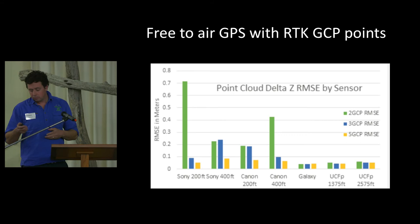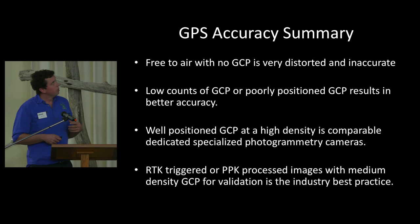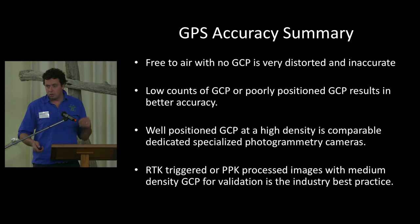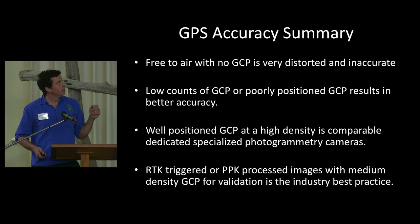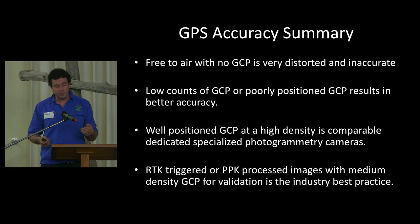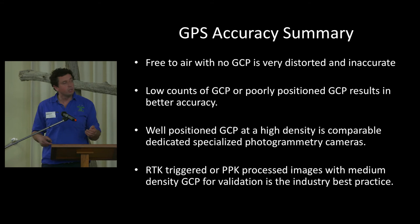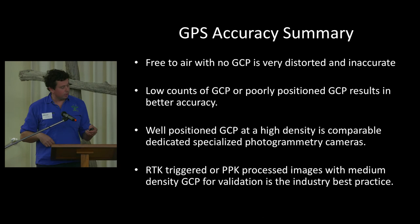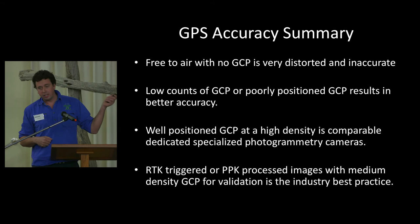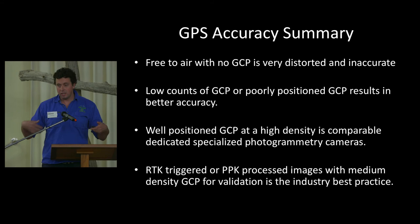To summarise GPS accuracy: free to air with no ground control points is distorted to hell — it looks pretty and it's prompt. Low-count, poorly-positioned GCPs are also problematic. The art of photogrammetry is a trade and a profession — hacks with a drone do struggle to learn it. With well-positioned, high-count ground control points you can get there, but it's time-consuming. The actual true way to achieve industry-benchmarks of survey-equivalent accuracy with UAV is RTK or PPK trigger — every time the camera is triggered it's got a two centimetre accurate timestamp. You still go out and lay down mats and measure those to validate, and that's how you chase absolute accuracy.